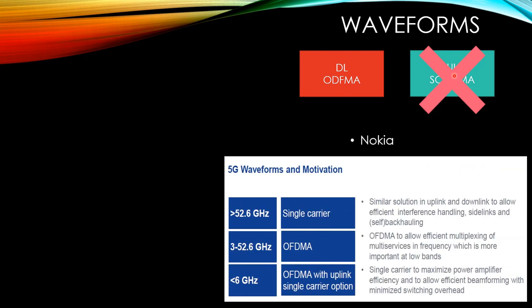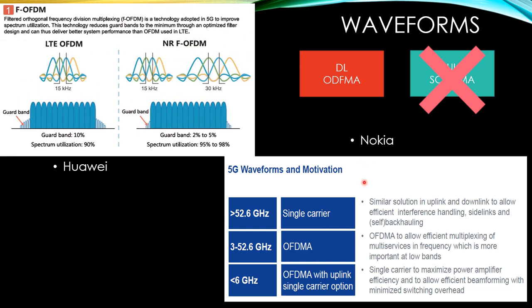Nokia's documents clearly state there will be a similar solution in both uplink and downlink using OFDMA, which will allow efficient interference handling, sidelinks, and efficient multiplexing of multi-services, plus single carrier mode to maximize power amplifier efficiency. Additionally, filtered OFDM — as discussed by Huawei per 3GPP — will reduce the guard band. Normally there are losses of around 10% using OFDM, but filtered OFDM reduces this guard band to 2 to 5%, allowing efficient spectrum utilization of up to 95 to 98%.